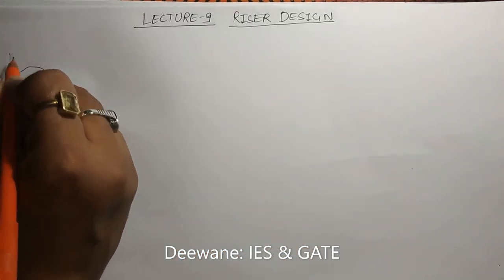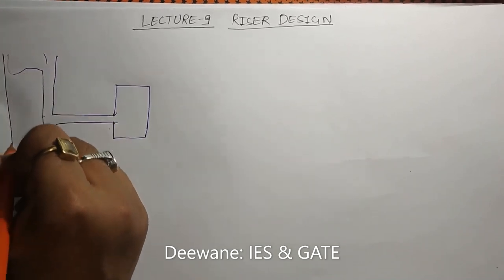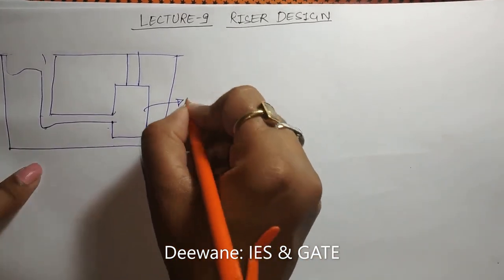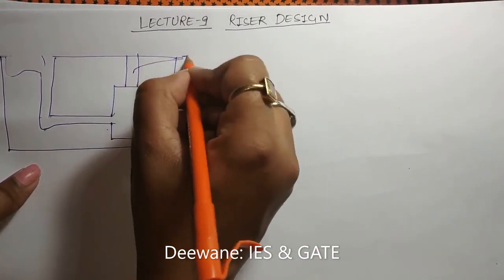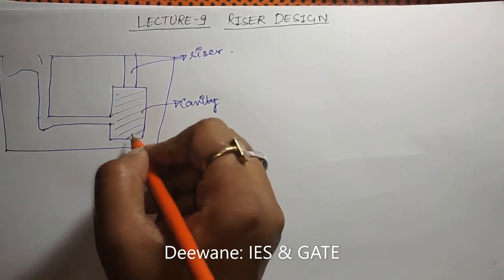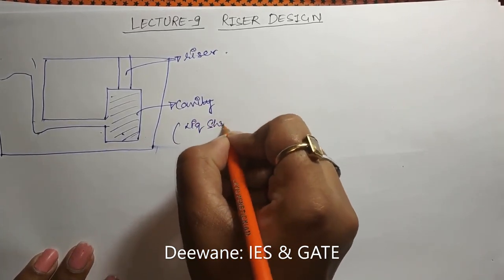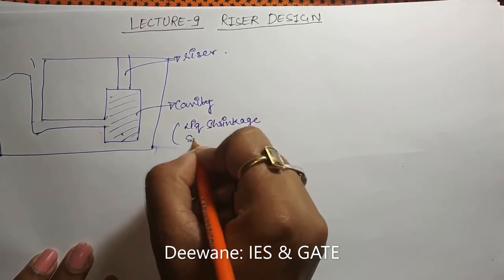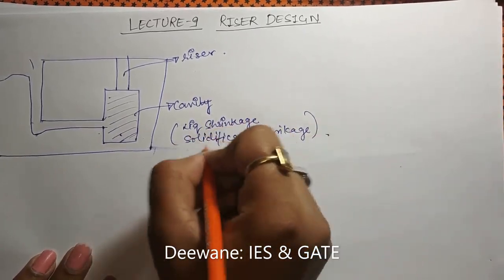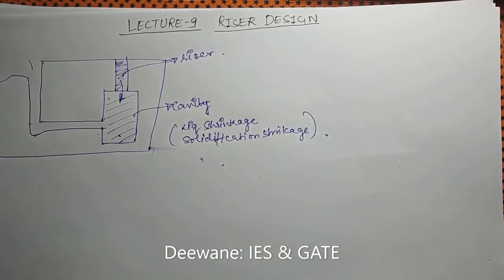Let me make a diagram. This is our casting, this is the casting design, and this one is the riser. This is the cavity and this is the riser. What the riser will do is, at the time of solidification of the casting — during liquid shrinkage and solidification shrinkage — whatever shrinkage occurs, the compensation for that is provided by the riser.